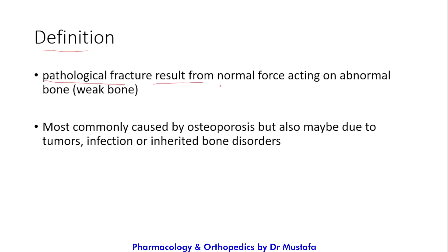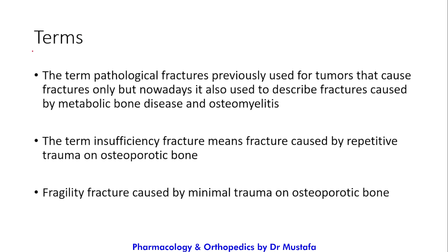Pathological fractures result from normal force acting on abnormal, weak bone, and are most commonly caused by osteoporosis, but may also be due to tumors, infection, or inherited bone disorders. The term 'pathological fracture' was previously used only for tumors causing fractures, but nowadays it is also used to describe fractures caused by metabolic bone disease and osteomyelitis - it is a more general term used for every pathology that causes a fracture in a bone.